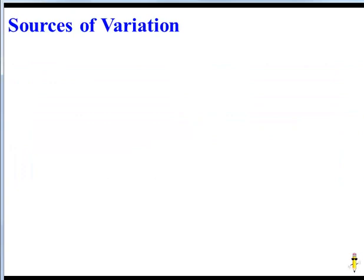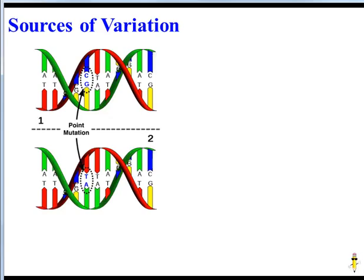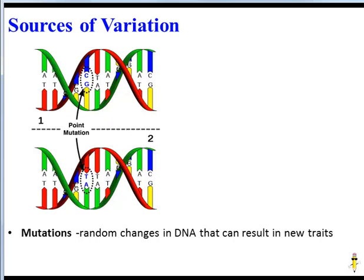Where does variation come from? Why do organisms have different traits? Well, ultimately, it starts with DNA. The sequence of bases in DNA is the instructions for building your traits. If you change that sequence, you change the instructions, and you potentially get a new trait. So ultimately, variation arises from mutations in DNA.